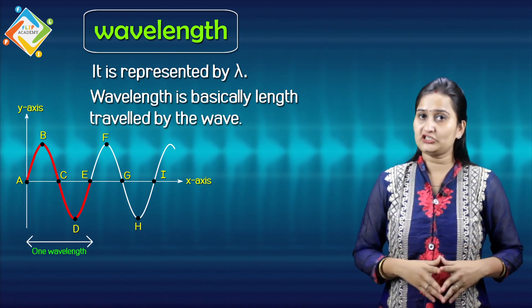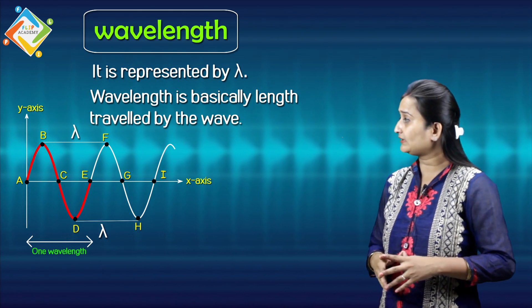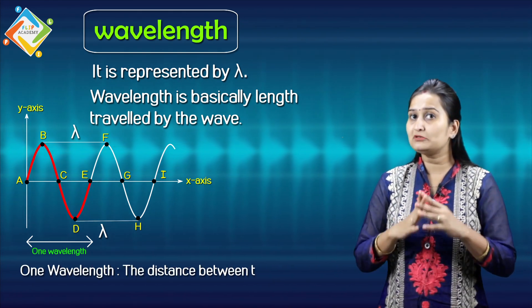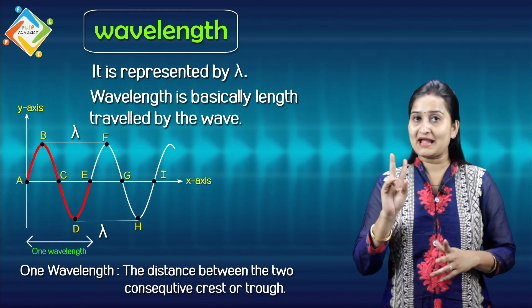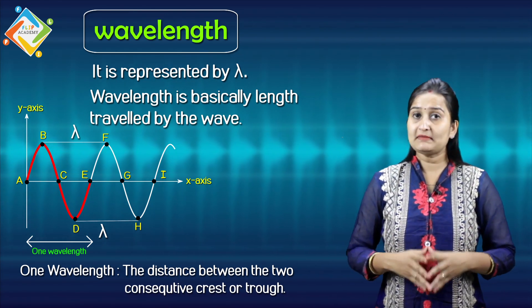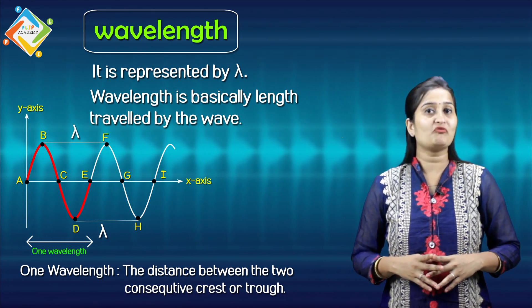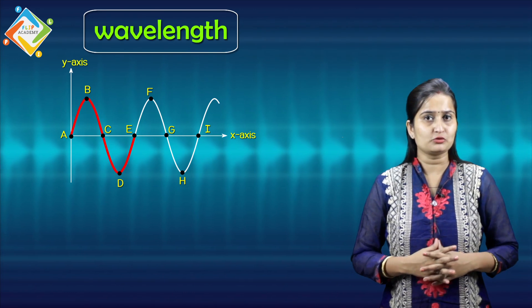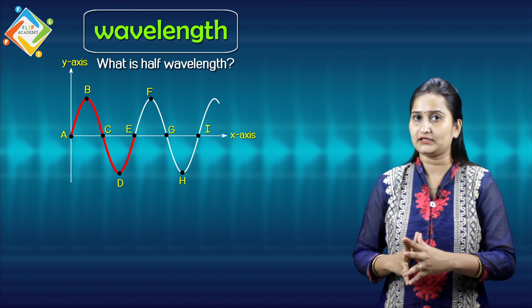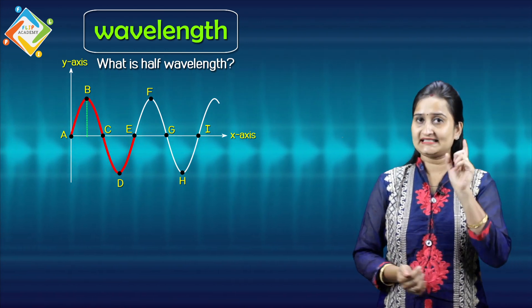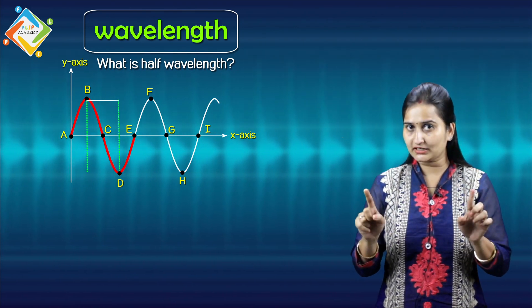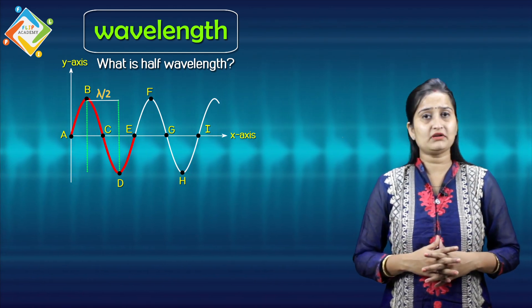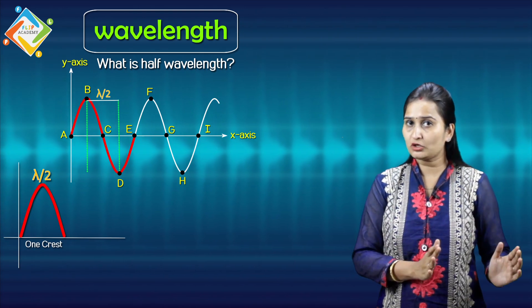Another definition from the diagram: one wavelength is also the distance between two consecutive crests or two consecutive troughs. That means the distance between two consecutive maximum points gives you one wavelength. Similarly, the distance between two consecutive minimum points also gives one wavelength. If you take the center point of a crest and the center point of a trough, that gives you half a wavelength.